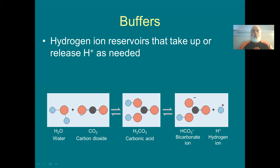This is a weak reaction — all of these things are in the water at the same time. Carbonic acid is an acid because it can break down, giving up a hydrogen ion. Bicarbonate is a base because it can combine with a hydrogen ion, forming carbonic acid and taking that hydrogen ion back out of solution. The only one that has impacted the pH is the carbonic acid that gave up its hydrogen ion, so I've got more hydrogen ions than I started with.